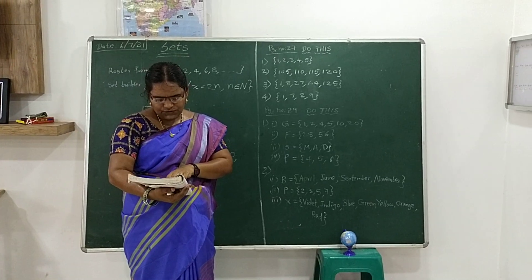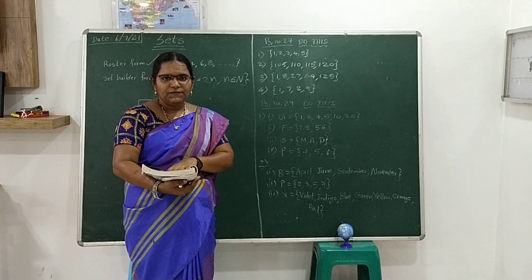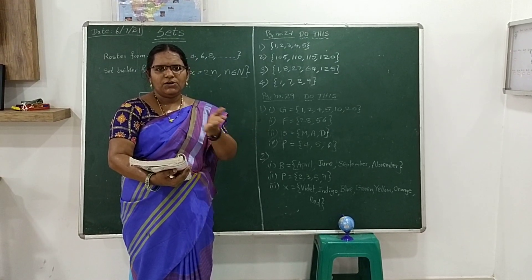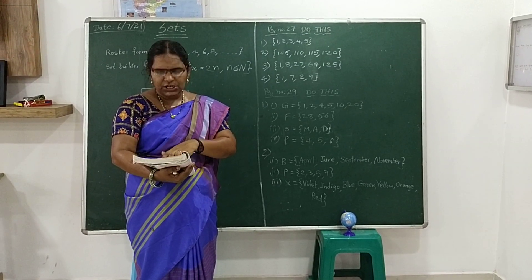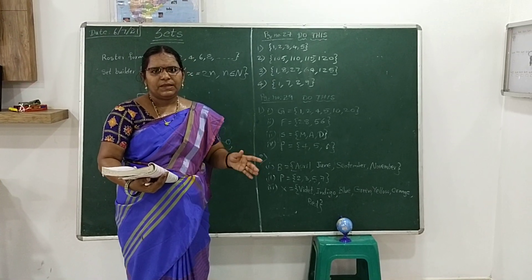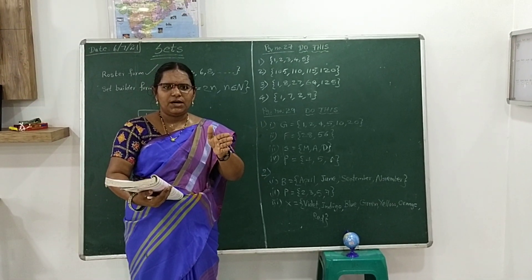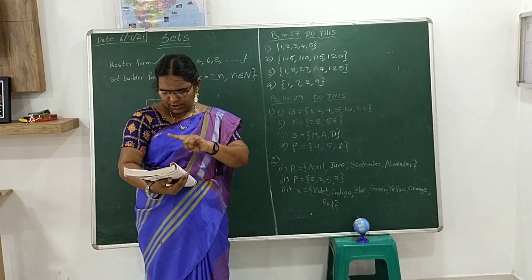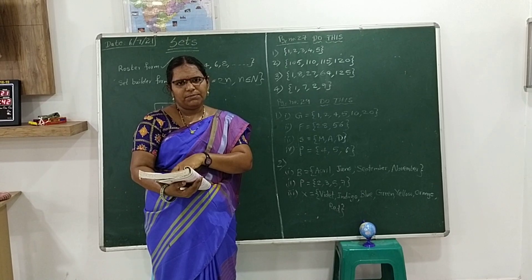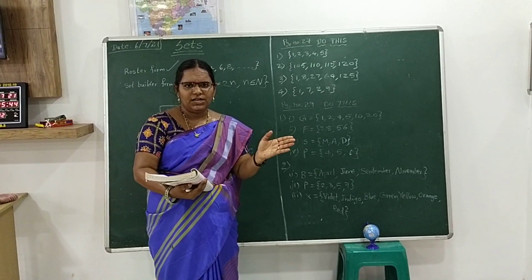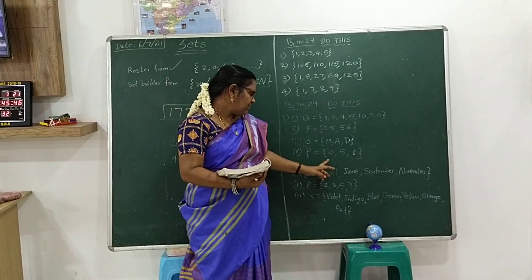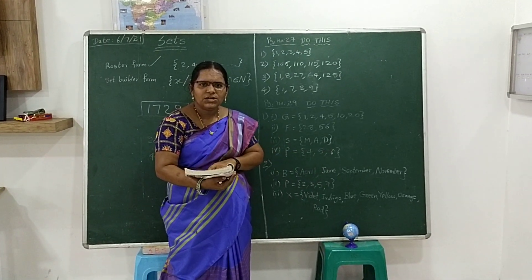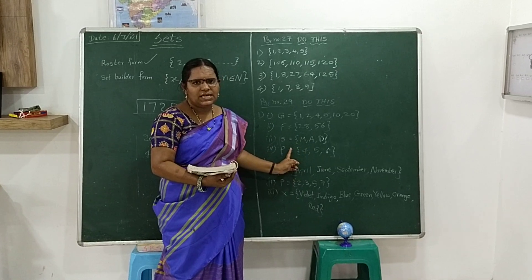P = {x such that x is a whole number between 3.5 and 6.7}. They are rational numbers but we need whole numbers between them. After 3.5, the whole numbers are 4, 5, 6. After 6 comes 7, but we need numbers before 6.7, so we stop at 6. The whole numbers satisfying the condition are 4, 5, 6. These are the elements of this set.